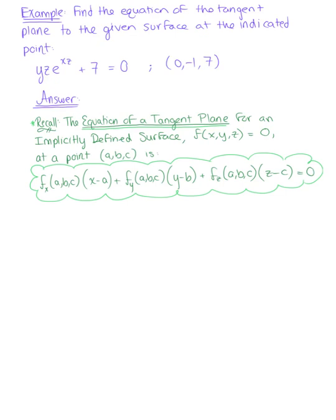Find the equation of the tangent plane to the surface defined implicitly by yz times the natural exponential raised to xz, plus 7 equals 0, at the point (0, negative 1, 7).